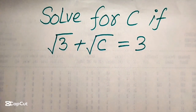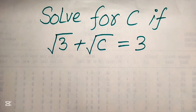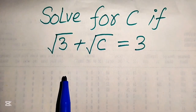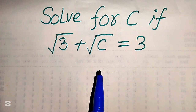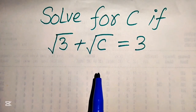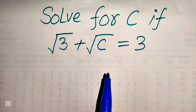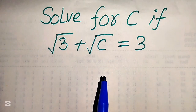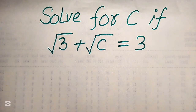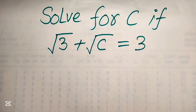Hello everyone, today I want to show you how to solve this problem for the values of c, if we have square root of 3 plus square root of c equals 3. I hope you like this method, but if you have any other method in mind, please don't hesitate to write it in the comment section.